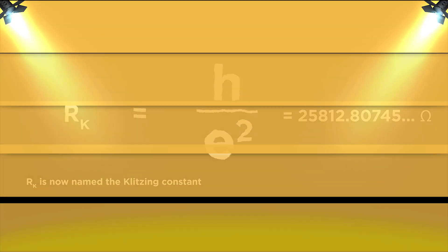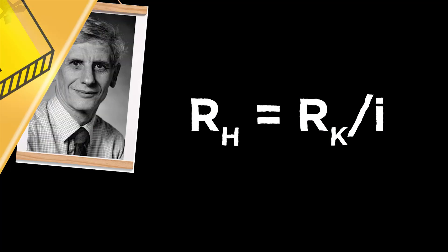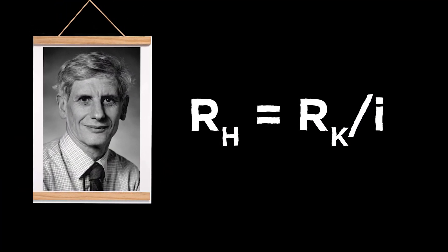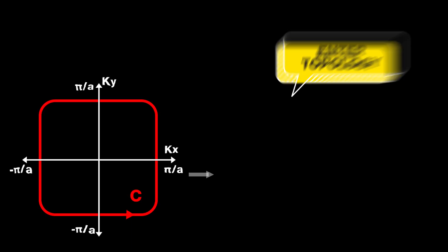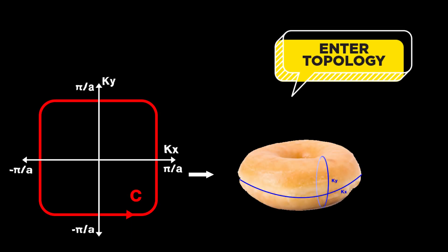But it was left to Thouless to explain why this baffling precision to parts per billion existed. He applied topology to study the wave function of electrons and declared that the mysterious i in the quantum Hall resistance formula was a topological invariant.